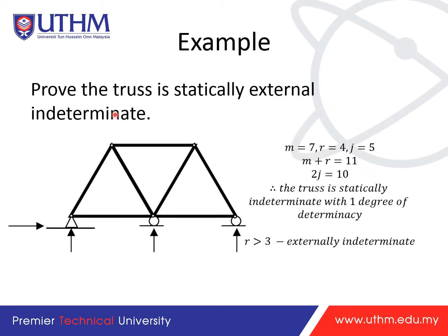To prove a truss is statically externally indeterminate, consider this example: there are seven members, four reactions (one pin joint giving two reactions, plus two roller supports each giving one reaction), and five joints. So m + r = 11 and 2j = 10. Since 11 > 10, the truss is statically indeterminate to one degree — it is externally indeterminate, meaning there is one extra support.